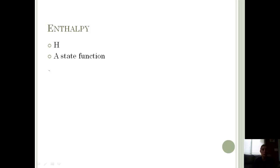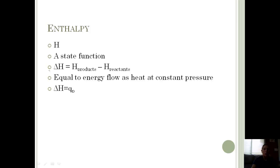Usually we're looking at change in enthalpy, so beginning and final. Change in enthalpy is equal to the enthalpy of all the products minus the enthalpy of all the reactants. Enthalpy is also equal to the energy flow as heat at a constant pressure, so delta H equals Q sub P, heat at constant pressure.